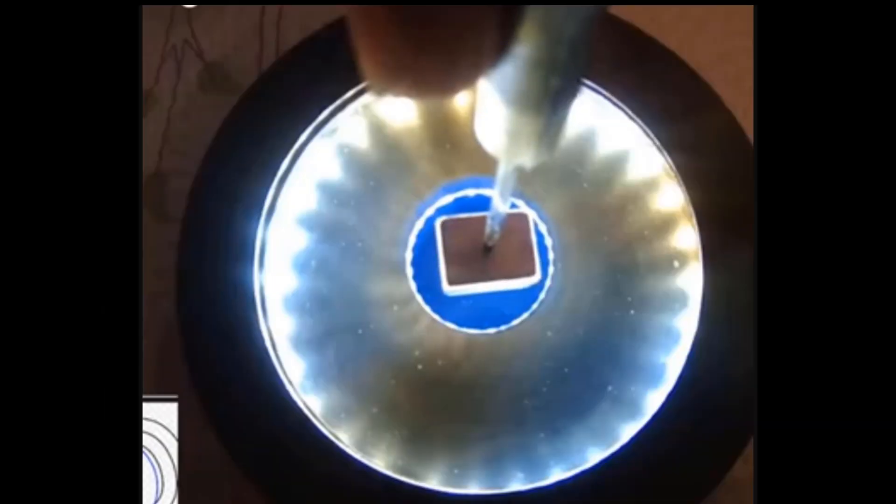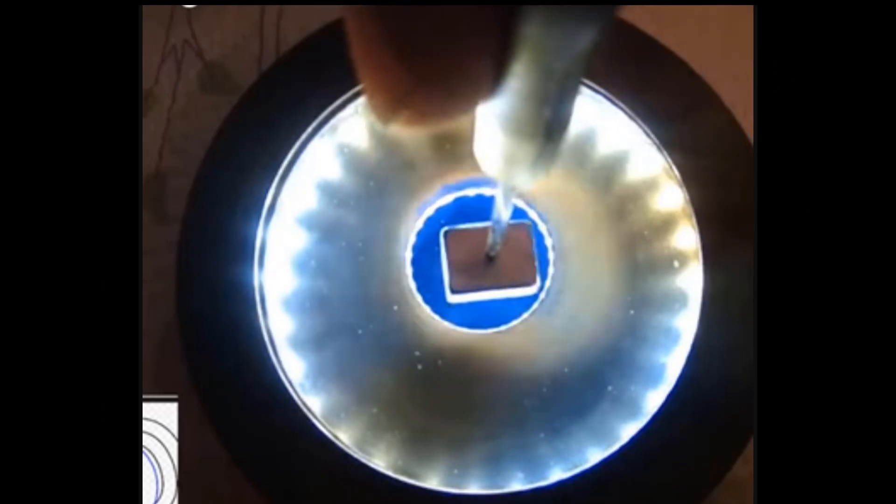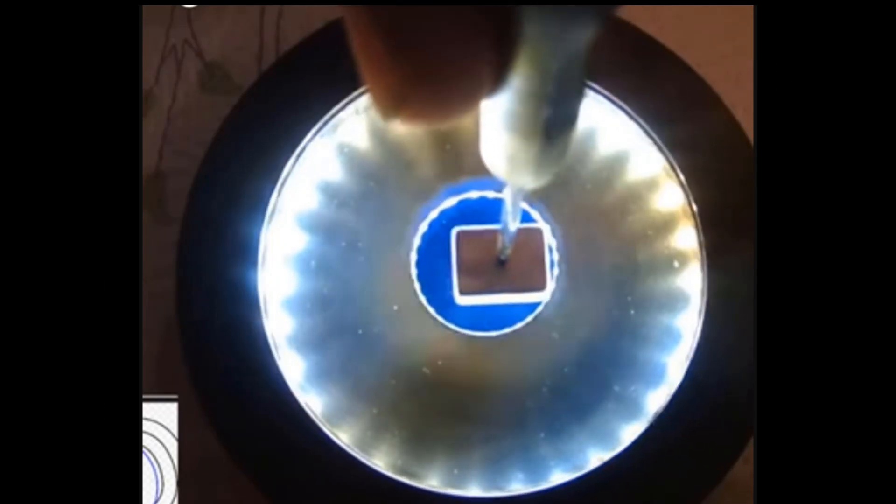I saw that the field, when it hit the center of the magnet, the field that was displayed on the ferro cell completely disappeared. I made that video and I put it up.